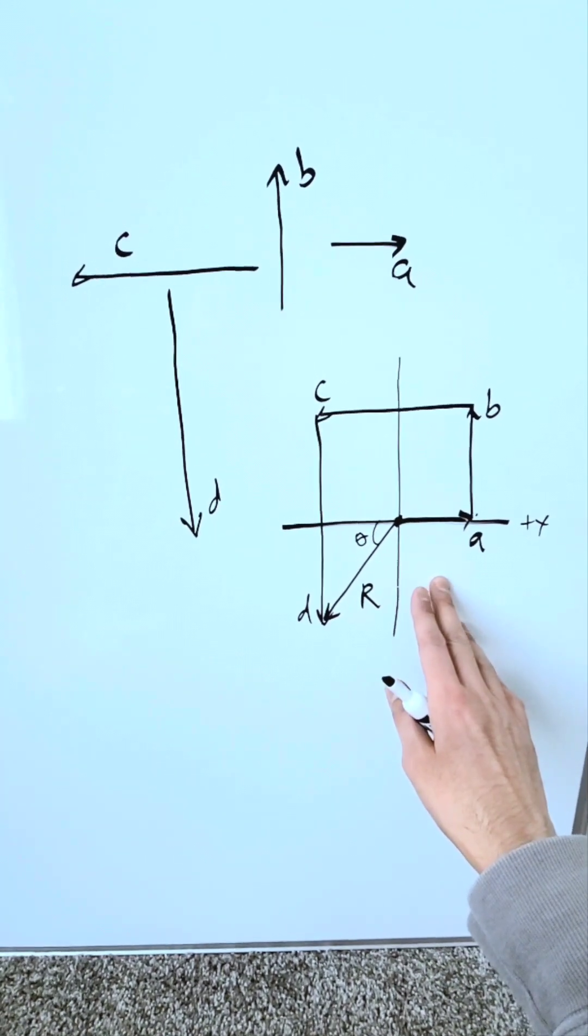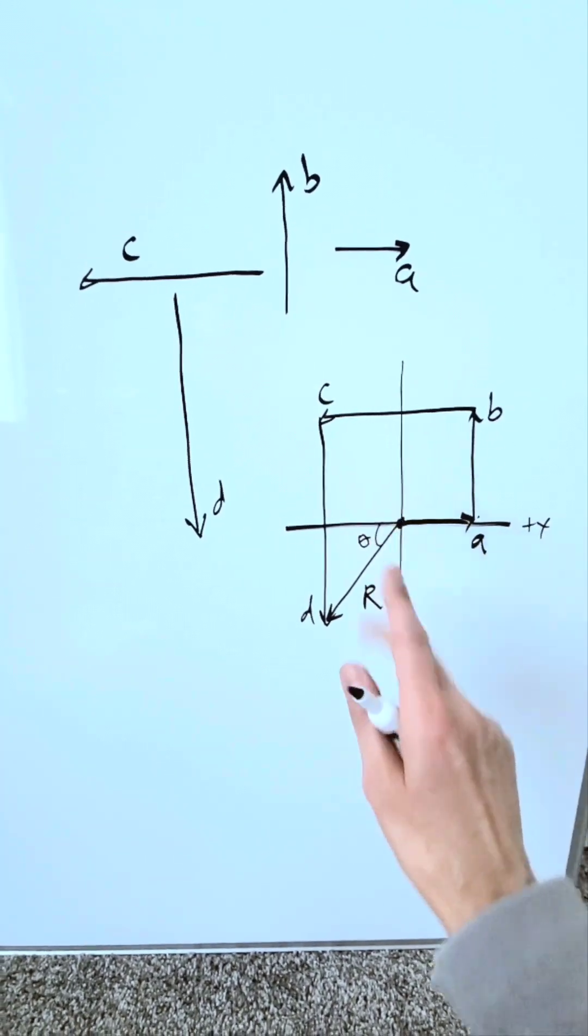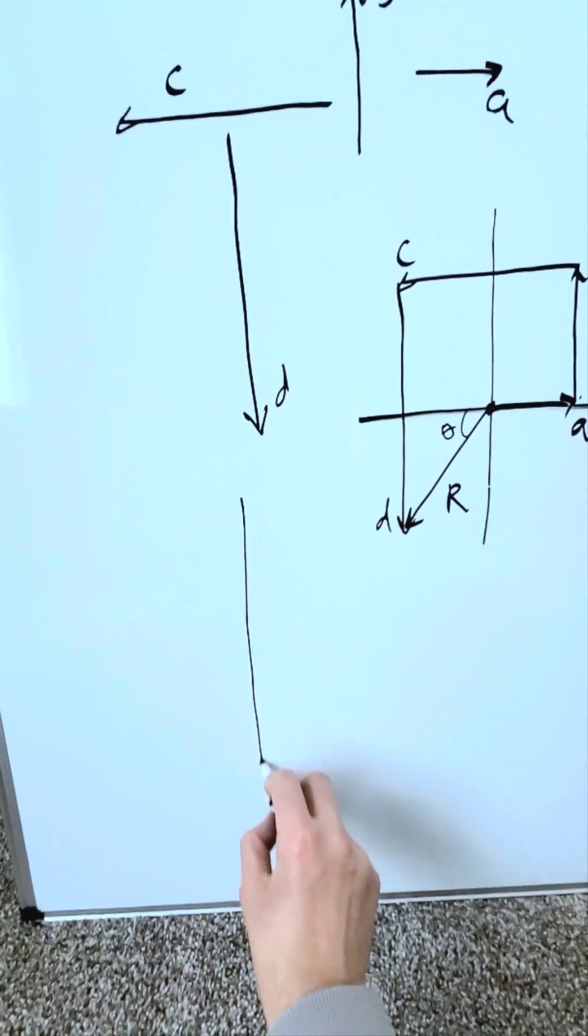In this particular case, we added in the order A plus B plus C plus D. What happens when we change things around? Let me show you.